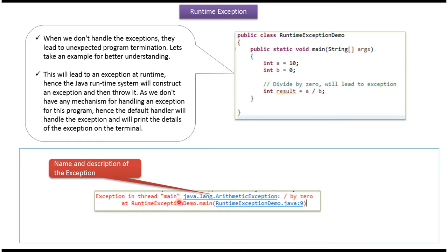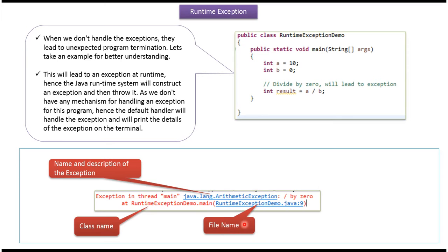The output shows: Exception in thread main java.lang.ArithmeticException: divided by zero. This is the name and description of the exception. The class name is RuntimeExceptionDemo.